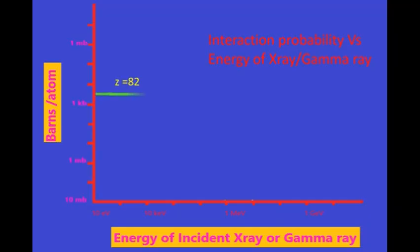Coherent scattering is an interaction of low energy photon, less than 10 kilo electron volts, with matter. The probability of coherent scattering varies with the atomic number of the absorber Z and energy of incident photon by Z by E square.